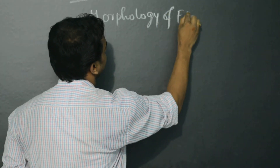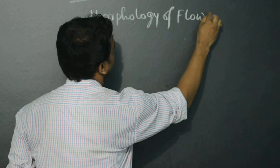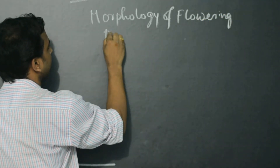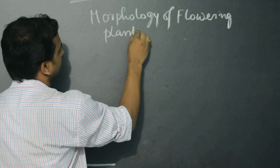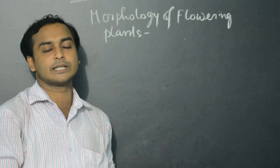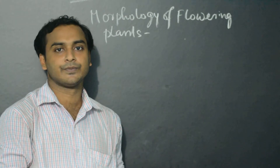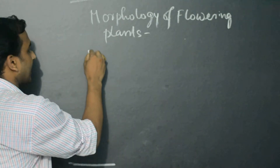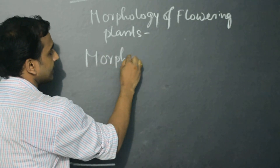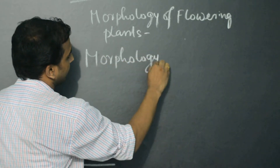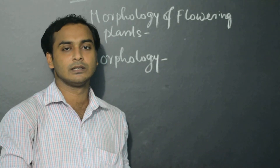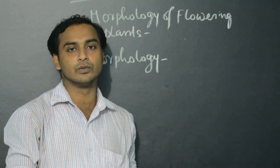We need to understand what is morphology. Morphology means the external characters of plants — that means stem, leaf, and root.